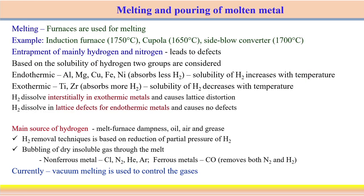Based on the solubility of hydrogen, we can consider two groups: one is endothermic and another is exothermic. For endothermic materials — such as aluminium, magnesium, copper, cast iron, and nickel — it actually absorbs less hydrogen, but the solubility of hydrogen increases with temperature. So with increasing temperature, solubility of hydrogen actually increases for these particular materials. For exothermic materials — such as titanium and zirconium — they absorb more hydrogen. But in this case, the solubility of hydrogen actually decreases with increasing temperature. These are two different contradictory characteristics between endothermic and exothermic materials pertinent to hydrogen absorption.